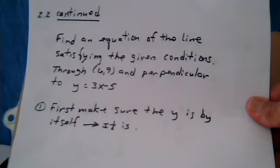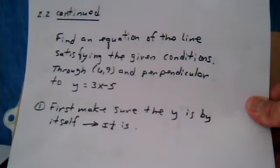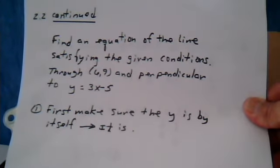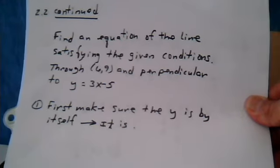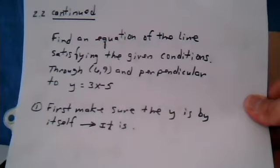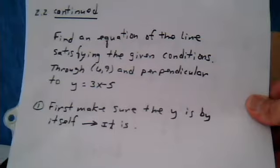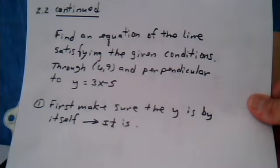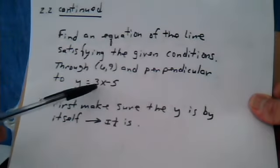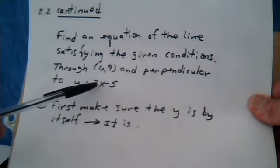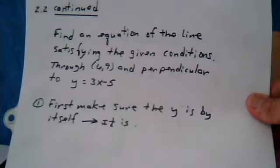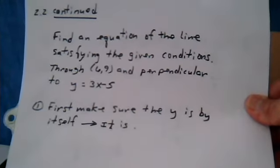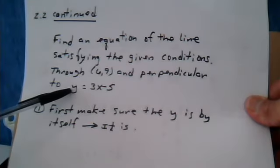Find an equation of the line satisfying the given conditions. Going through point (6, 9) and perpendicular to y equals 3x minus 5. So as soon as you see the word perpendicular, you zero in on the slope. The slope is the one that determines perpendicular. So you identify the slope of the given line, which is 3. And from there, you flip it around and change the sign. But make sure that the y is by itself first.